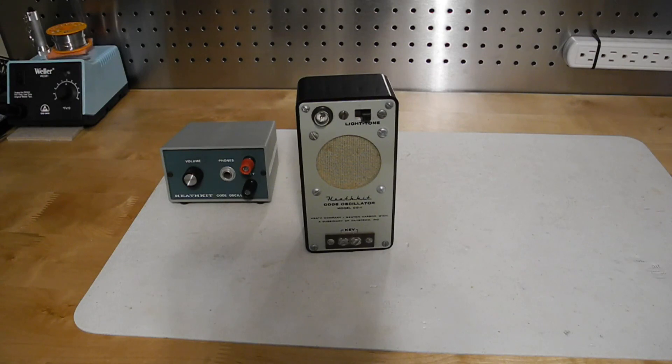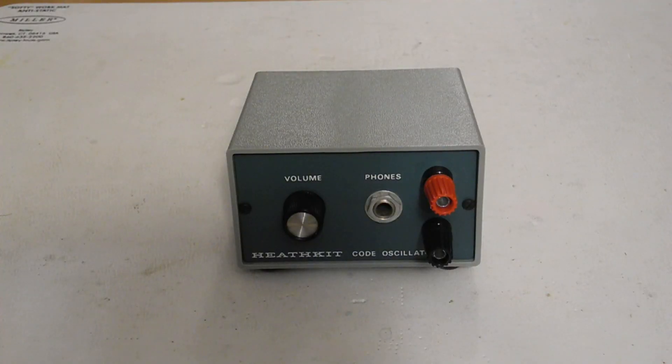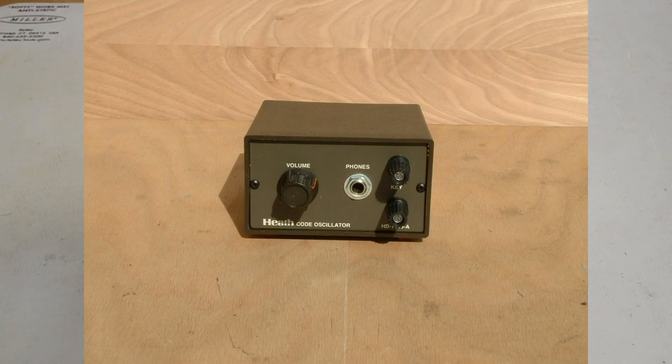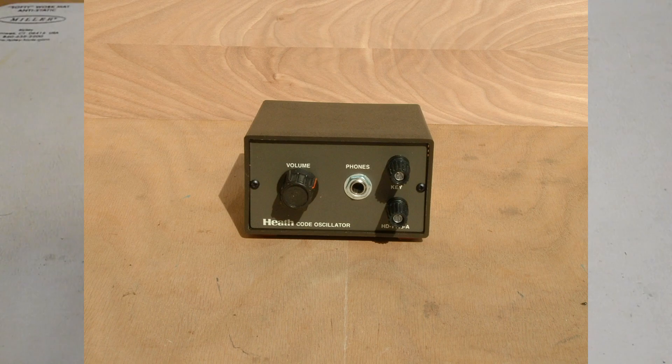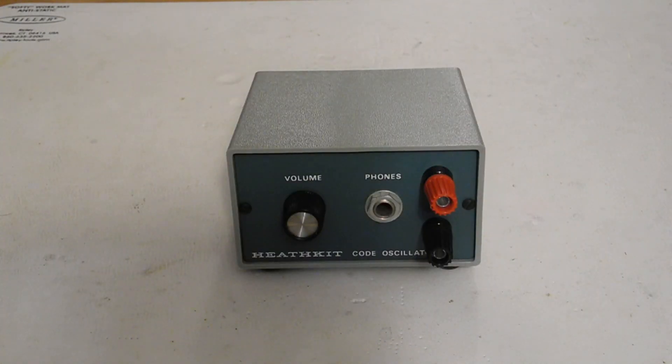Previous models of Heathkit practice oscillators were the CO-1 offered from 1959 to 1967 and the HD 16 from 1967 to 1974. In 1987 the HD 1416 was restyled in a brown color which Heathkit had started to adopt at that time for their ham radio products and sold as the HD 1416A. In 1988 it was changed to a black color and sold as the HD 1416H which was offered until 1991. All three HD 1416 models were identical other than color.